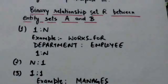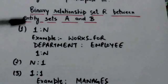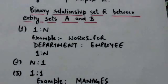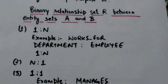For example, in the 'works for' binary relationship type, department to employee is of cardinality ratio 1 to N. This means each department can be related to any number of employees, but an employee can be related to only one department.